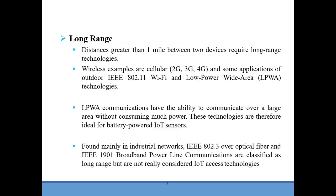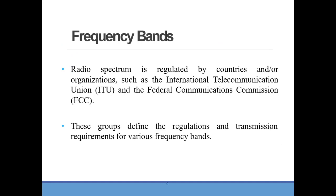Long range wireless or wired technologies cover distances of more than one mile between two devices. Wireless technologies that come under long range are 2G, 3G, 4G, some applications of outdoor IEEE 802.11 Wi-Fi, and Low Power Wide Area (LPWA) technologies. LPWA communication has the ability to communicate over a large area without consuming much power, making it ideal for battery-powered IoT sensors. In industrial networks, IEEE 802.3 over optical fiber and IEEE 1901 Broadband Powerline Communication fall under long range but are not typically used in IoT access technologies.